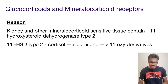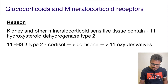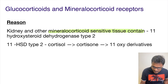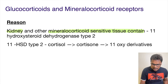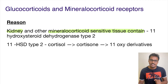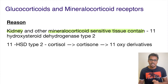The kidneys and other mineralocorticoid-sensitive tissues present in the body have a specific enzyme. This enzyme is called 11-beta hydroxysteroid dehydrogenase type 2, or 11β-HSD type 2.